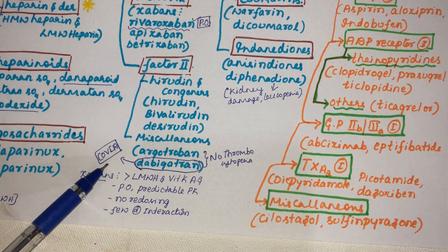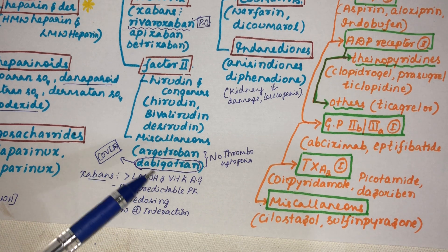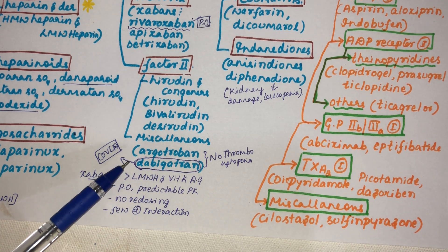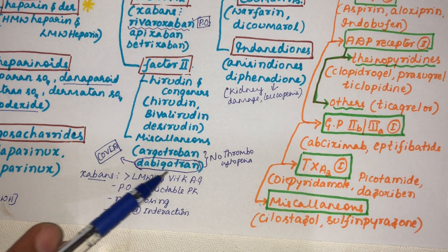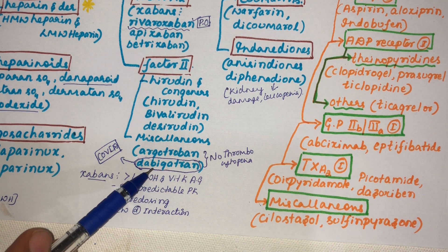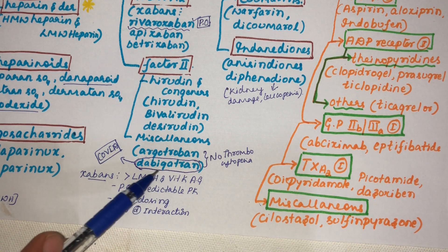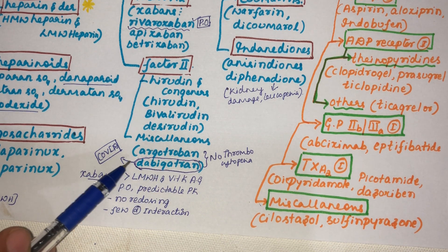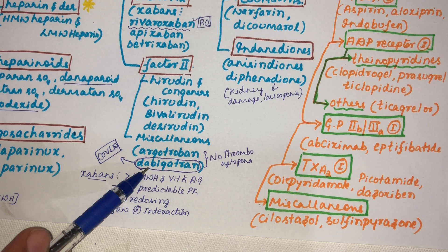In the context of COVID treatment, heparin is used in the ICU for emergency anti-coagulation. Once patients are discharged and cured, dabigatran is prescribed as a tablet for home use as maintenance anti-coagulant therapy. Dabigatran is an important drug to remember for COVID patients.